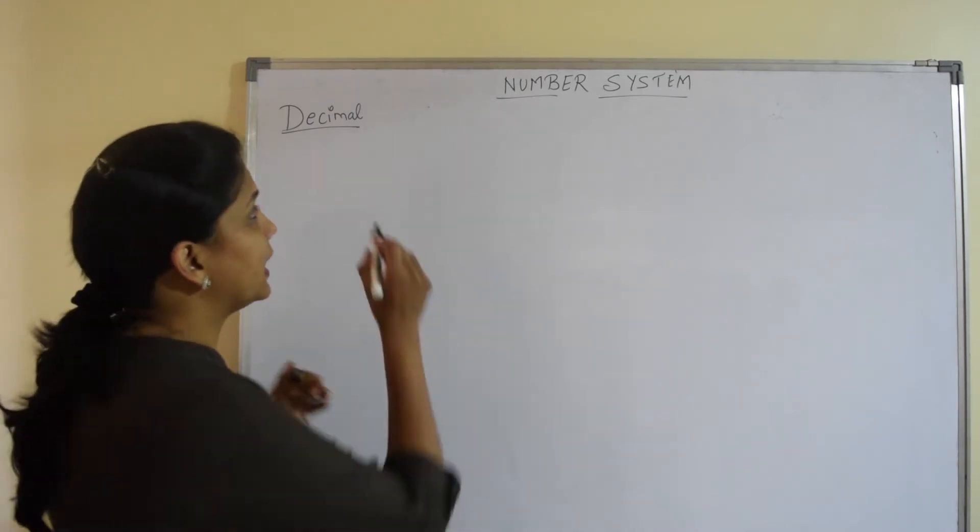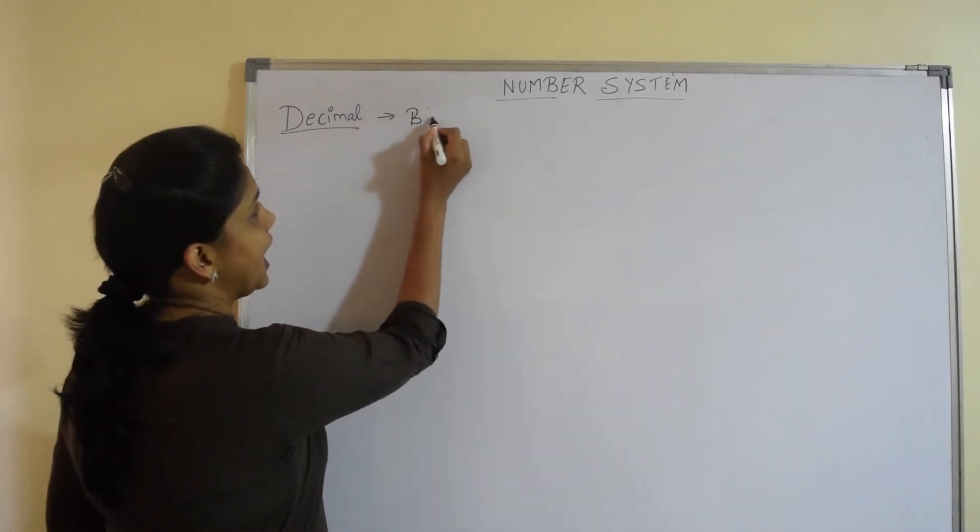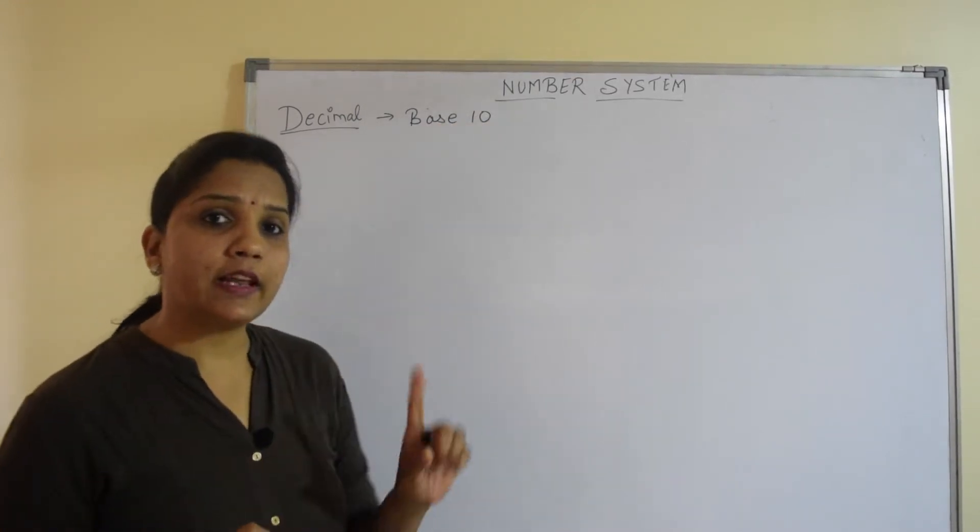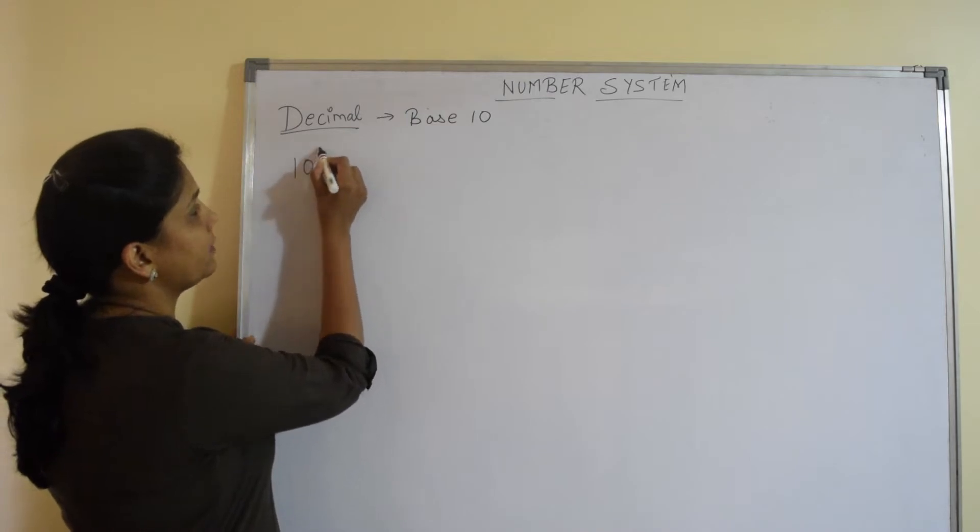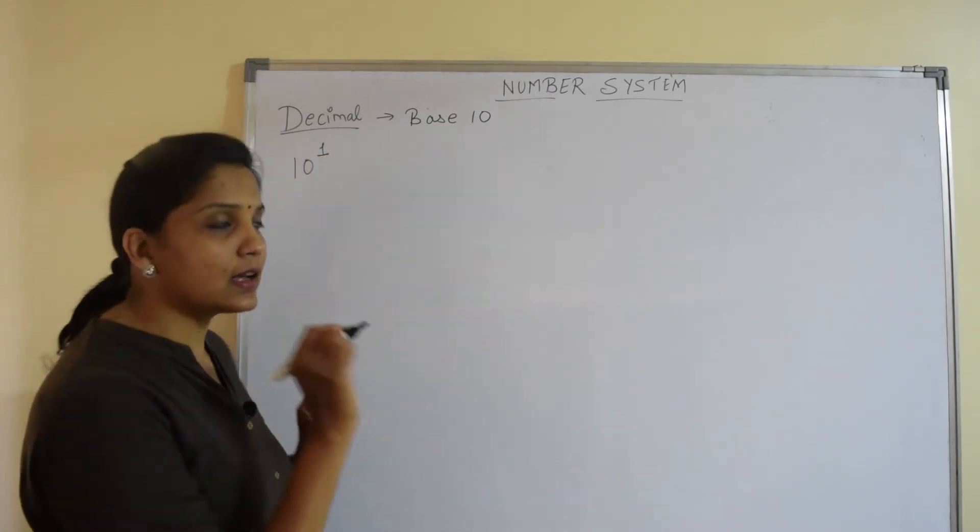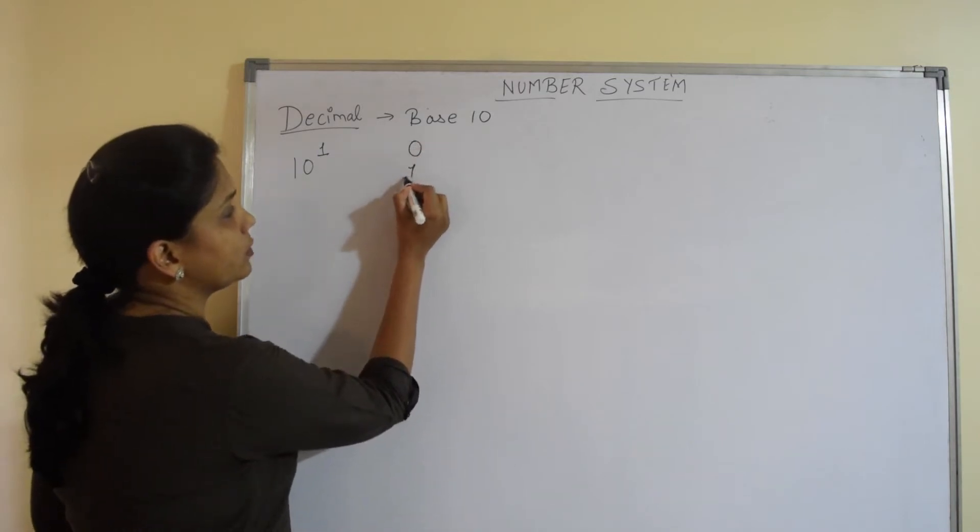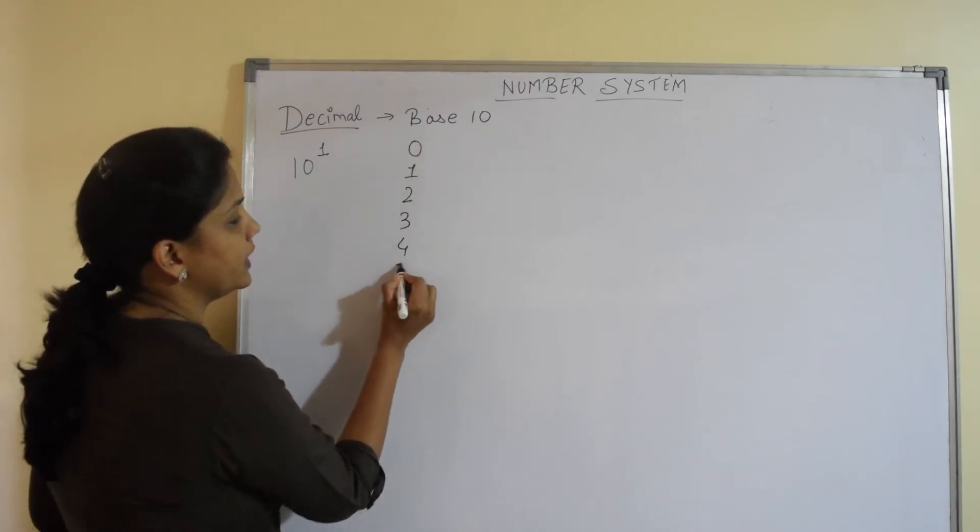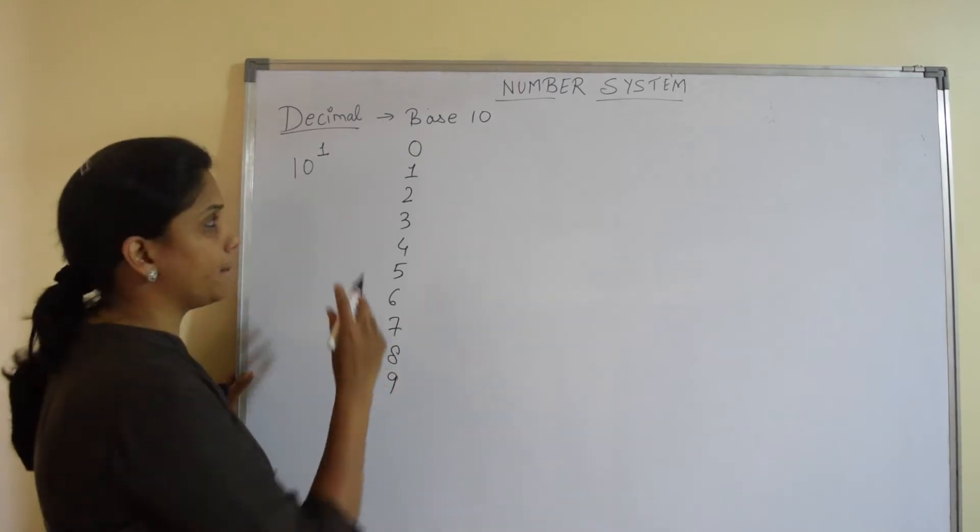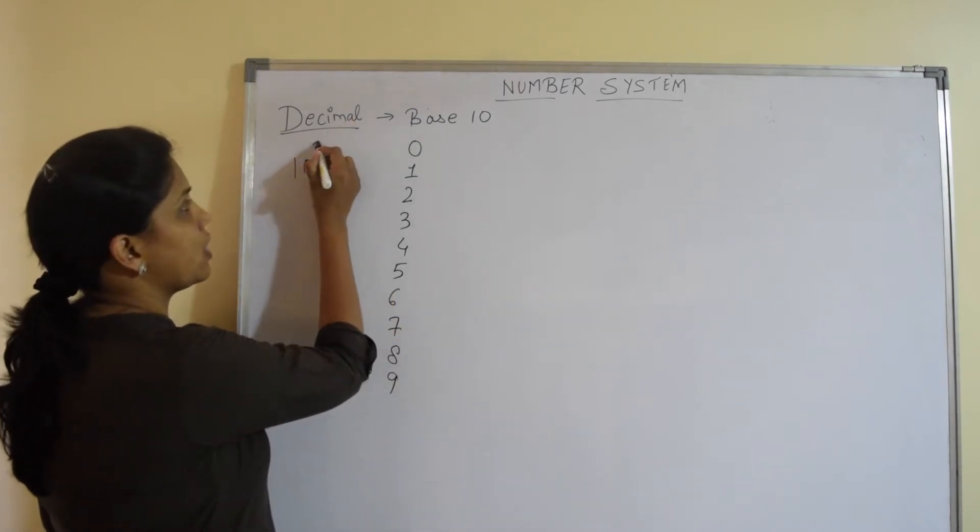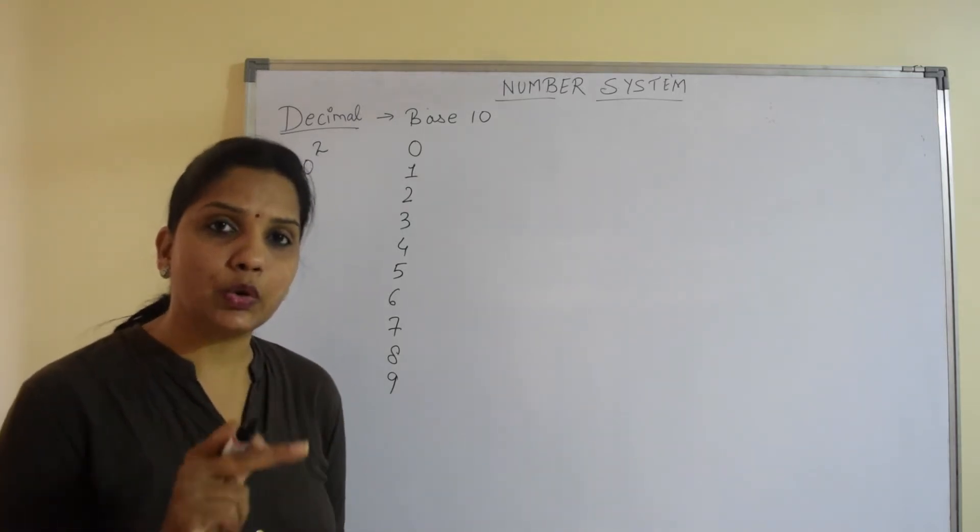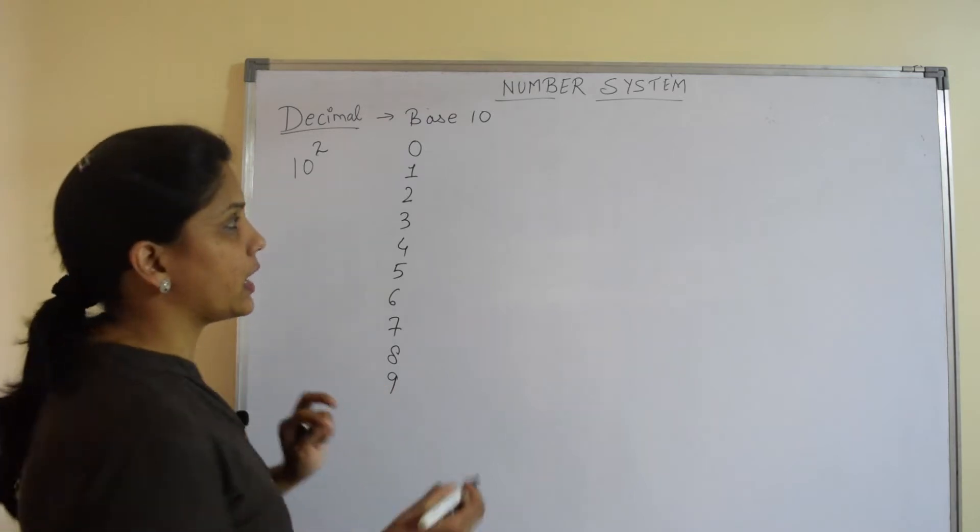We all know that decimal number system has a base of 10. If we want to create single digit numbers, it is 10 to the power 1. That is, we can create 10 single digit numbers starting from 0 to 9. If we want to create 2 digit numbers, that is 10 to the power 2, we can create at the max 100, that is 10 into 10, 100 2 digit numbers.